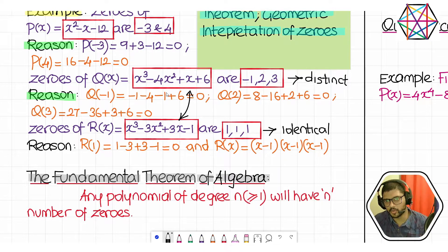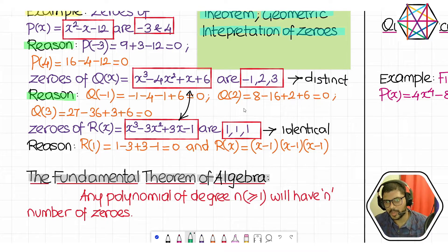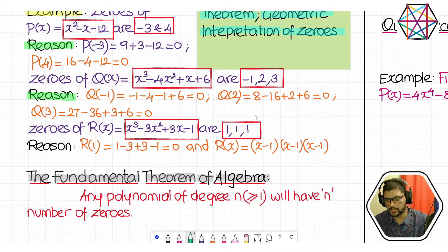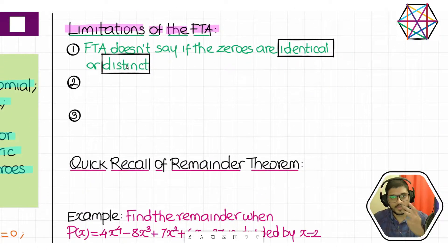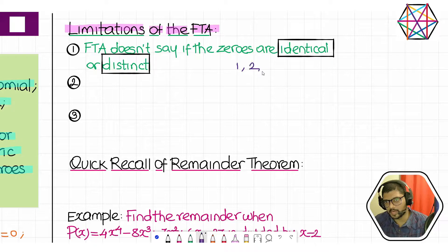They both are of the same category — both are cubic polynomials. According to FTA, both have three zeros. But here all three zeros are distinct, whereas in the other case all three zeros are identical. You may even have a mixture of both: something like one, one, and two — some zeros are repeating and some are distinct.